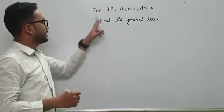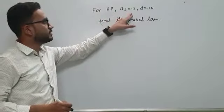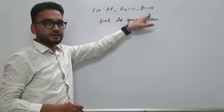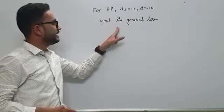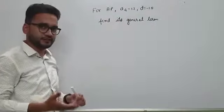The next question which is given to us is, for an AP, 4th term is 12, common difference is minus 10, and they are telling us what will be the general term of this AP.